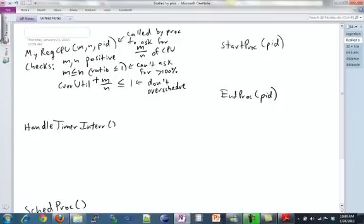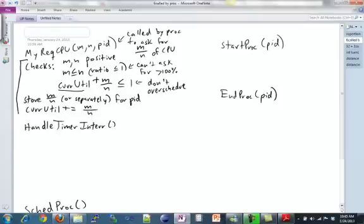And for that, you're going to have to keep track of what this current utilization means. So now that we've done all these checks and everything looks good, you can go ahead and store M over N, or you can store them separately. Or you can multiply them by 100 and store them that way if you don't like floating points. But you have to associate them for the given PID. And then, this is really important, you have to update your current utilization, right? Because it now includes this new ratio that our process asks for. And all of these things are a good starting point for what MyRequestCPU needs to do.